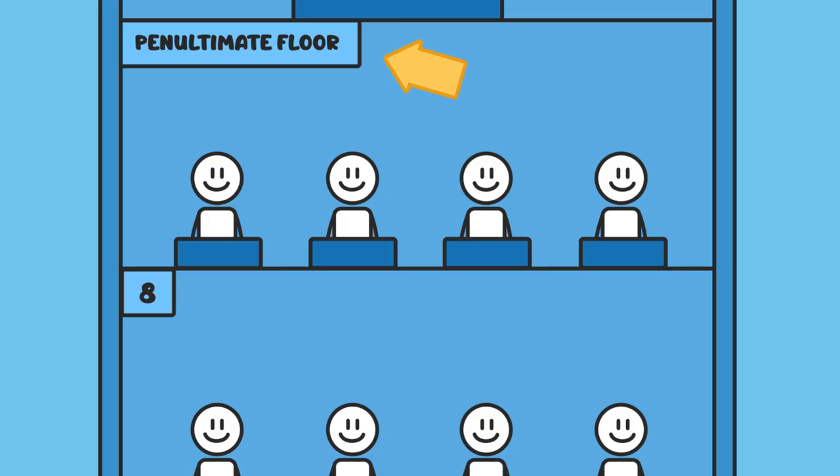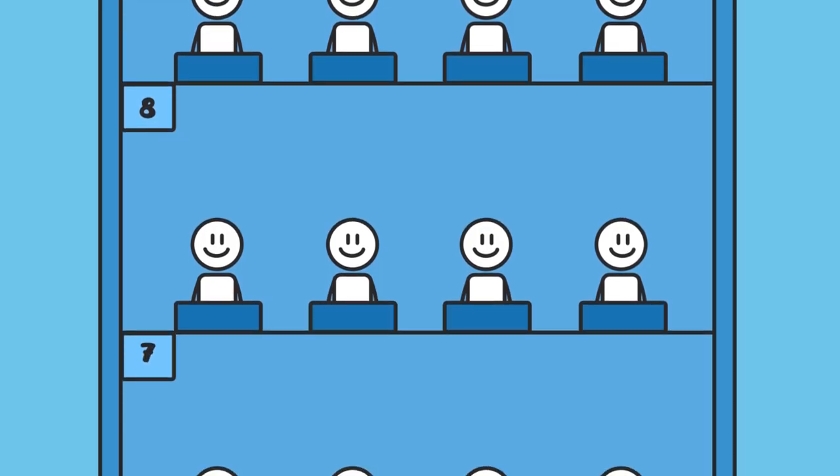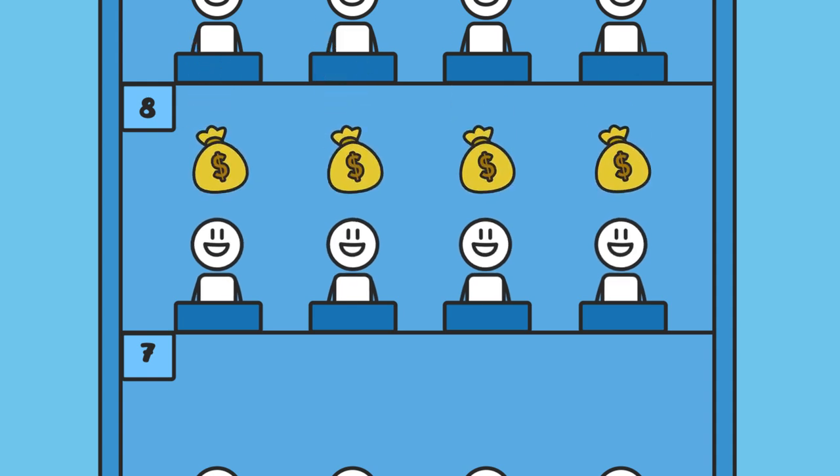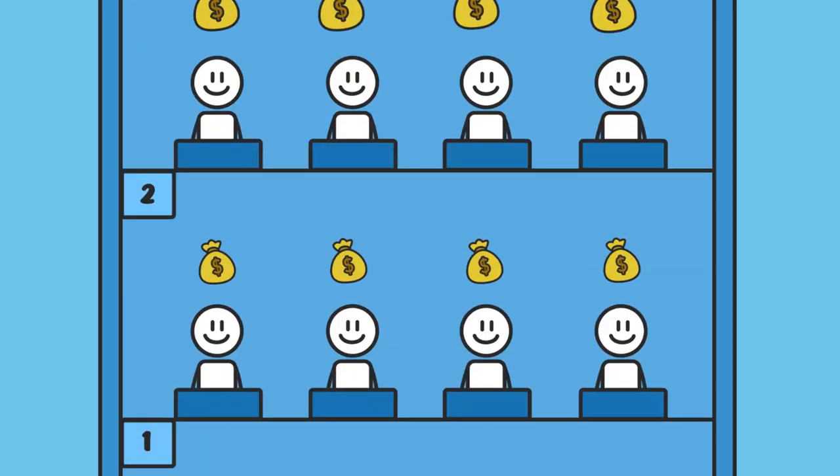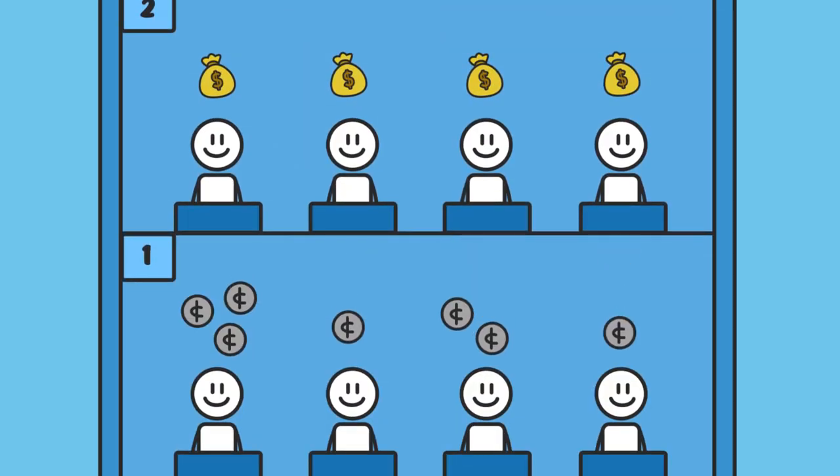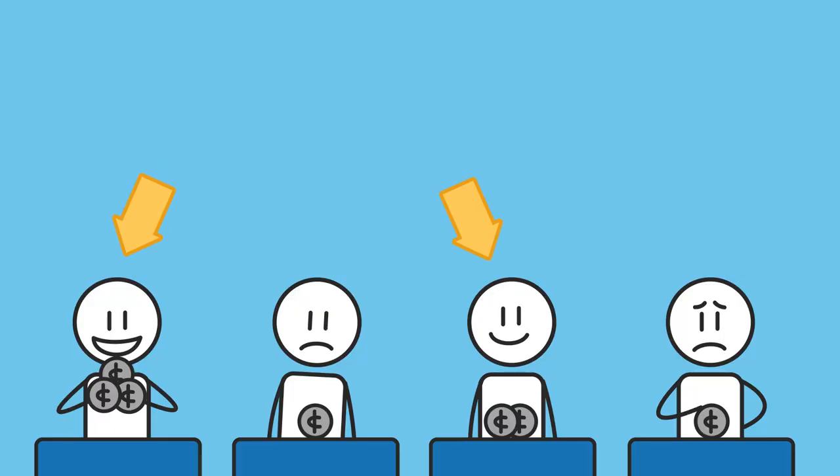The top management team then proceeds to do the same with the workers in the level below. They pass on part of their earnings to the ones who passed on their work to them. This happens all the way down to the bottom floor. As we can see, the ones who were involved in designing the best product got paid better than those who weren't.